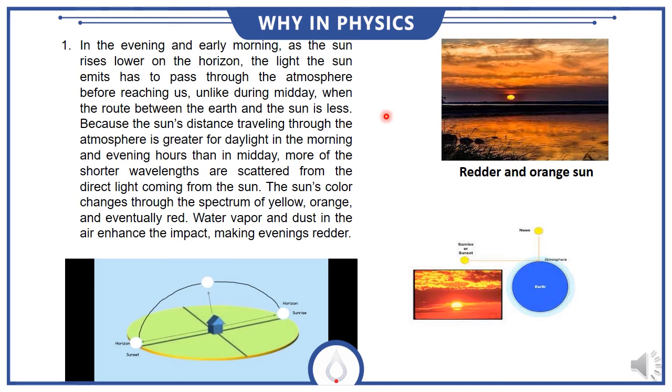This means that sunlight doesn't come directly to us. It passes through water molecules, gases, and dust particles in the atmosphere over a greater distance at sunrise and sunset.